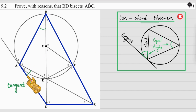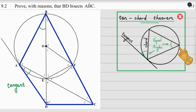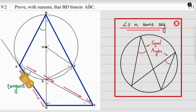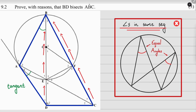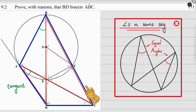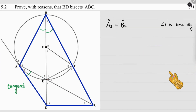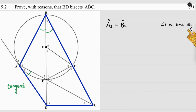Now we need to prove that B2 is also equal to that same angle. Remember, ABCD is a cyclic quad — we proved that in the previous part. Applying angles in the same segment, we follow A3 and take it up to B2. We can see A3 equals B2 because of angles in the same segment — the bowtie. So we write: A3 equals B2, reason — angles in the same segment.